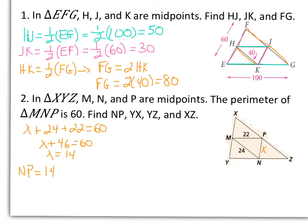Now, once I know all the lengths of my midsegments, I can just double their side to get the length of the line segment that they're parallel to. So NP is parallel to XY, so that means YX will be 2 times 14, or 28.